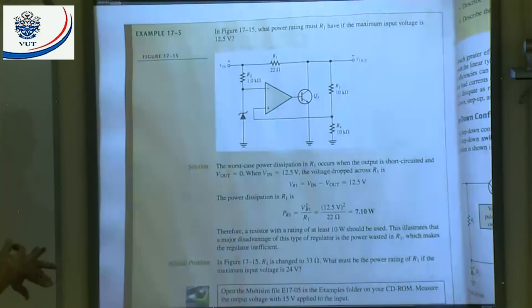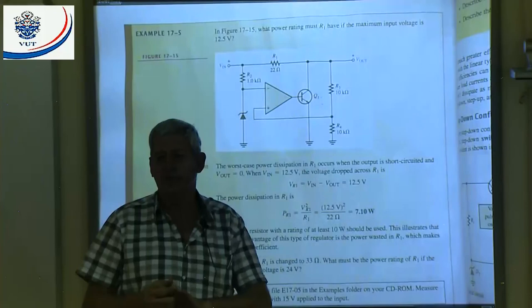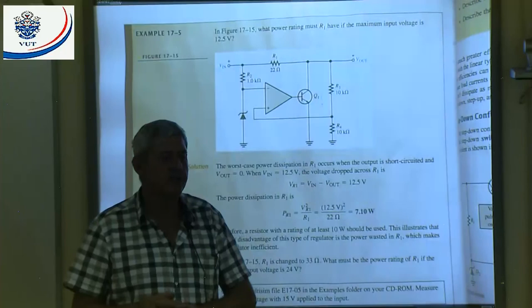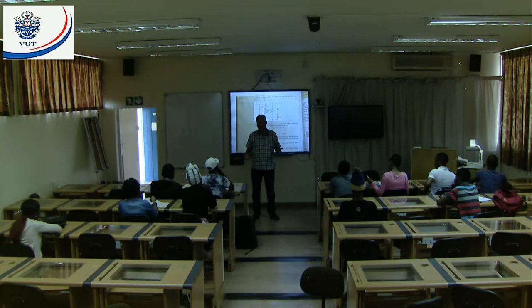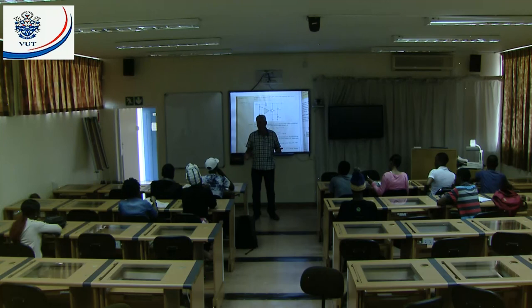We've covered the series regulator and the shunt regulator. Next time we will look at switching regulators. In modern designs, switching regulators are preferred because the transistor is used as a switch — switched on hard and switched off completely — so there is no large voltage drop across the transistor and no excessive power dissipation problem. Thank you.